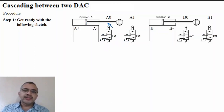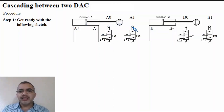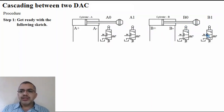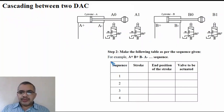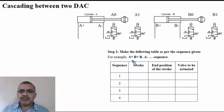Step 2: Prepare a table with four columns. The first column is the sequence number (1, 2, 3, 4). The second column is the stroke — write A+, B+, B-, A-. The third column specifies the end position of that stroke: after A+ the cam is at A1; after B+ it is at B1; after B- it is at B0; after A- it is at A0. The fourth column specifies which valve is pressed at the end of that stroke.